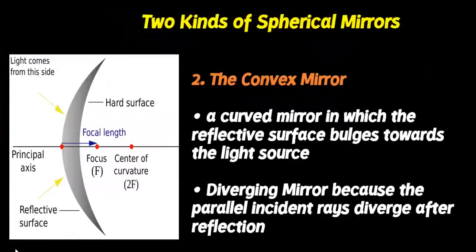The second kind of spherical mirror is known as the convex mirror. This is a curved mirror in which the reflective surface bulges towards the light source. It is also called the diverging mirror because the parallel incident rays diverge after reflection.